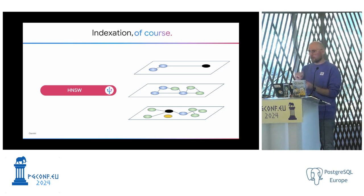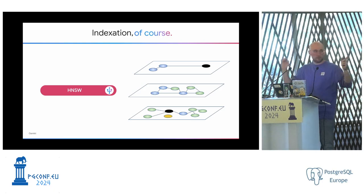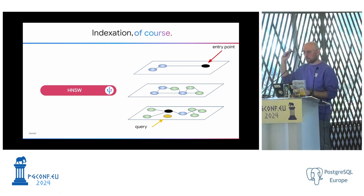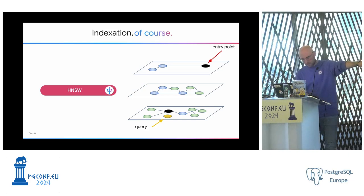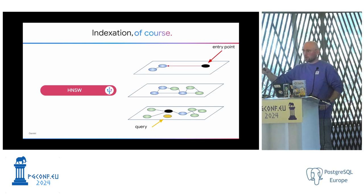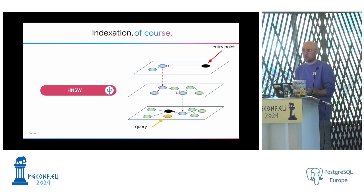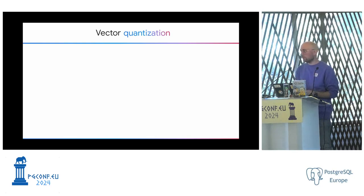HNSW works differently — it operates on layers. It takes all vectors in your table, builds a first layer with sparse, widely-spaced vectors, then adds subsequent layers with vectors progressively closer together, navigating through layers from a random entry point to find the closest vector at each level. You can customize the number of layers — more layers means more accuracy but longer queries. IVF Flat and HNSW come with pg_vector; there's also ScaNN, available on AlloyDB, which is based on Google's search algorithm.